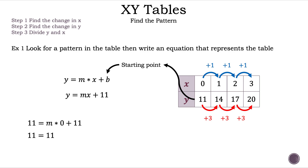That's not a big deal. Let's try the next point, (1, 14). Now we can substitute 1 for X and 14 for Y. So we have 14 is equal to M times 1 plus 11. And M times 1 is M. So we have 14 is equal to M plus 11. What do we think M is equal to? That's right — M is equal to 3. Let's substitute 3 for M. So now we have Y is equal to 3X plus 11 for our equation.